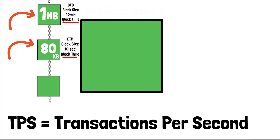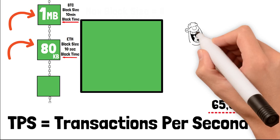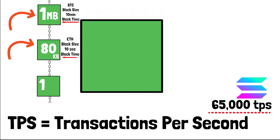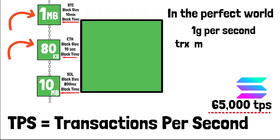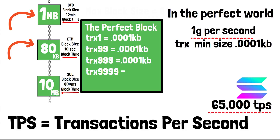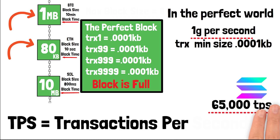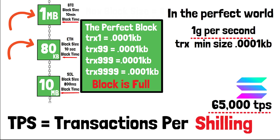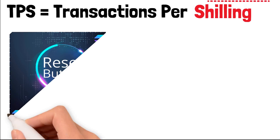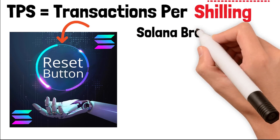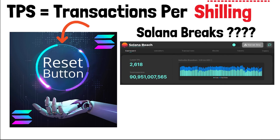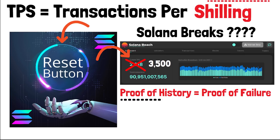This is where TPS comes into play. Blockchains like Solana claim their blockchain can process 65,000 TPS, but that means on the Solana blockchain each block is 10 MB and a block is produced every 800 milliseconds. Solana claims that running at peak performance it can produce 1 GB worth of data every second — implying every transaction is 0.0001 KB in size and every block is filled to max capacity. TPS is just a term blockchains use to sound impressive.